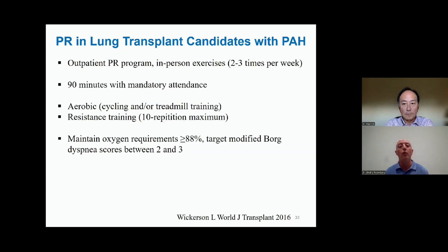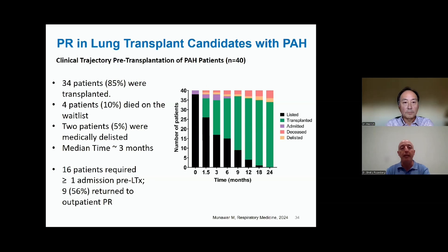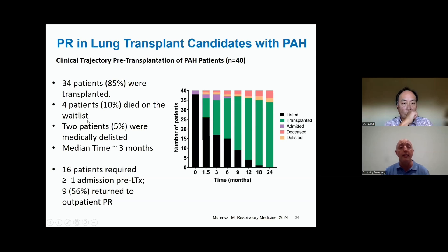We were cognizant to maintain their oxygen saturation at 88% or higher. Individuals who desaturate with pulmonary hypertension have a reciprocal effect — if you drop your oxygen, the pressures in the pulmonary arterial blood vessels actually constrict and get tighter, making things worse. With our experience of 40 lung transplant candidates — a very sick group — the median time on the transplant list was three months. 34 patients went on to be transplanted, four patients unfortunately passed away while waiting, and two patients were medically delisted for other causes. Notably, 16 out of 40 required at least one admission to hospital while waiting for transplantation, and nine of those 16 were able to return to outpatient rehabilitation.